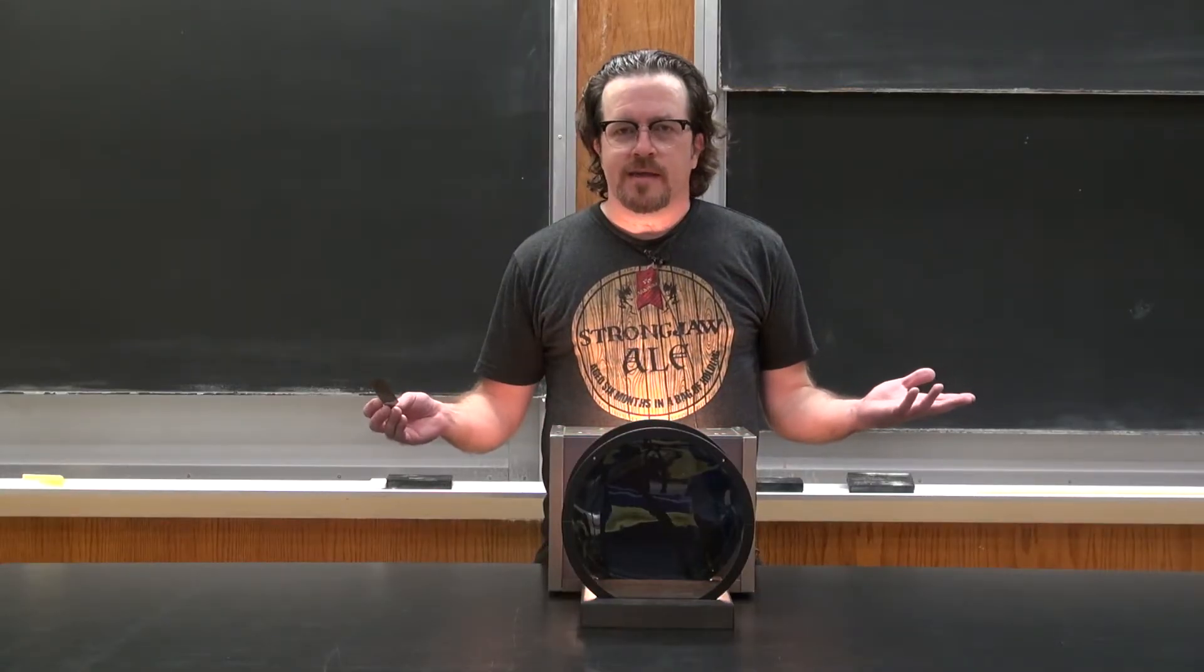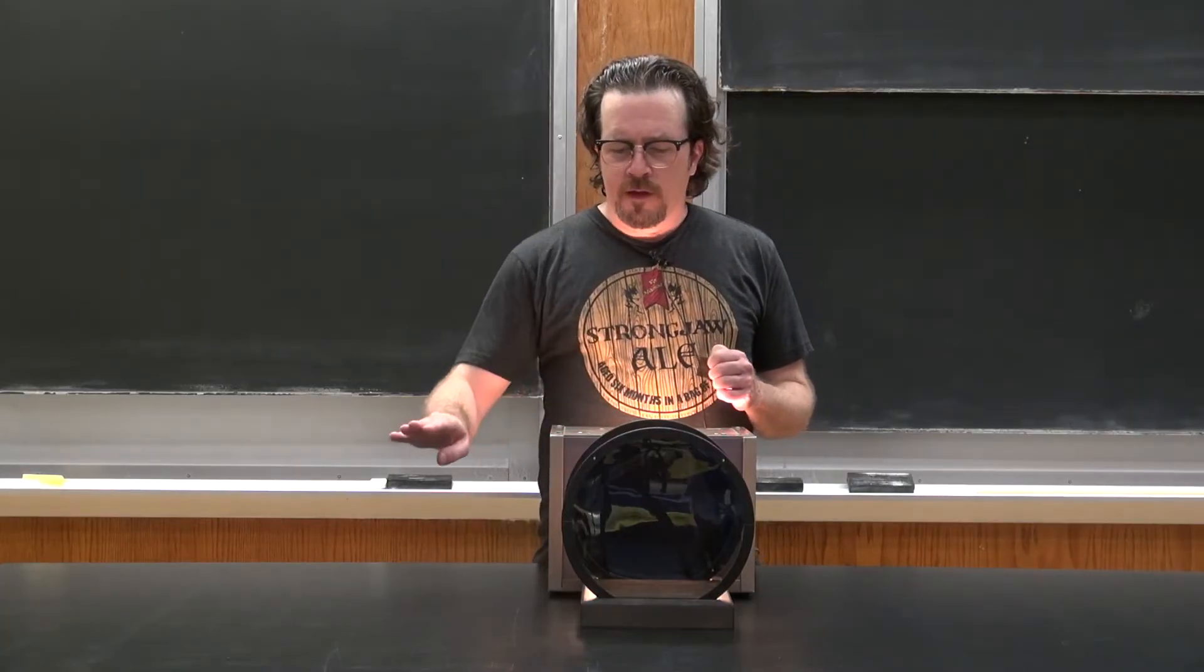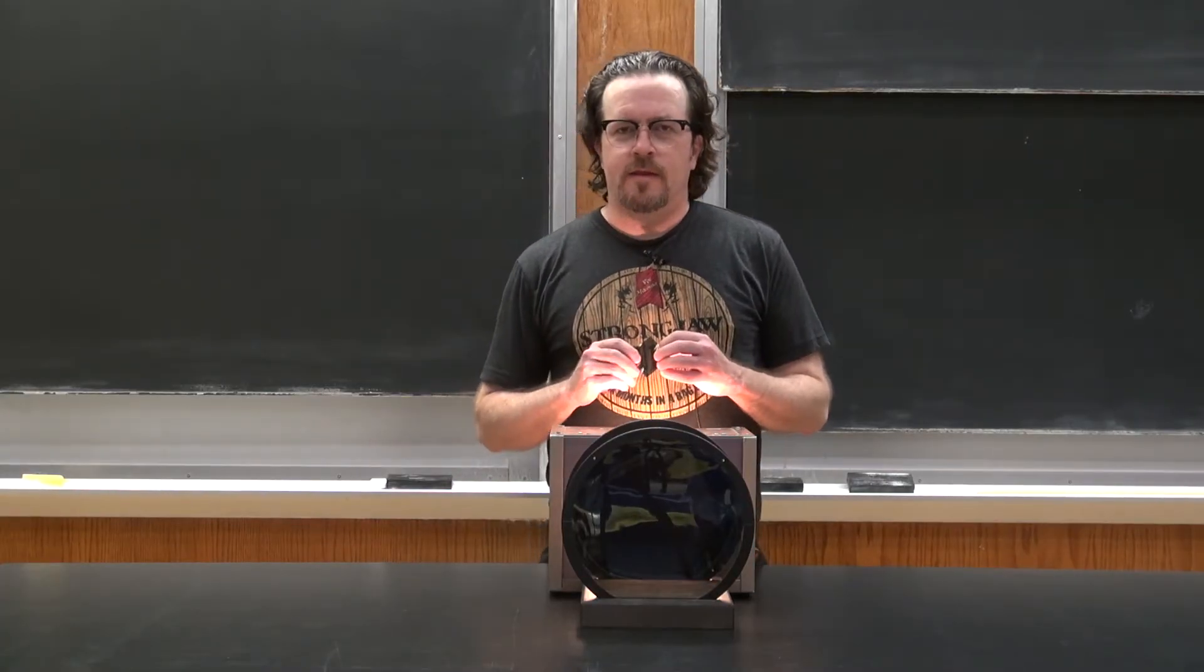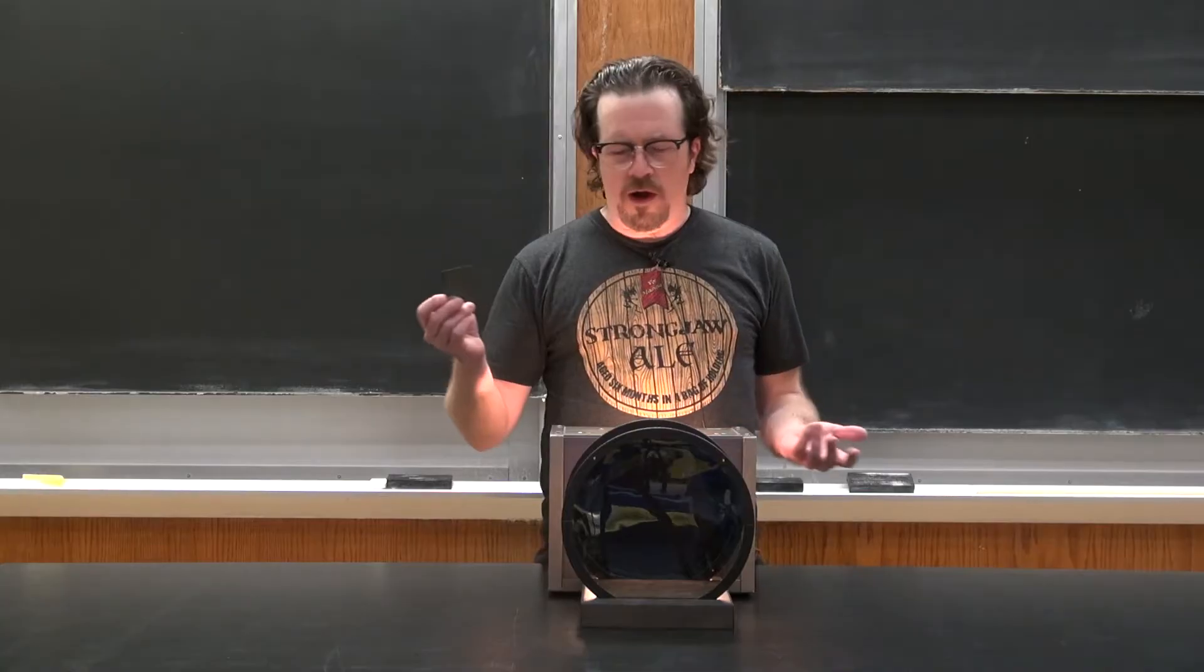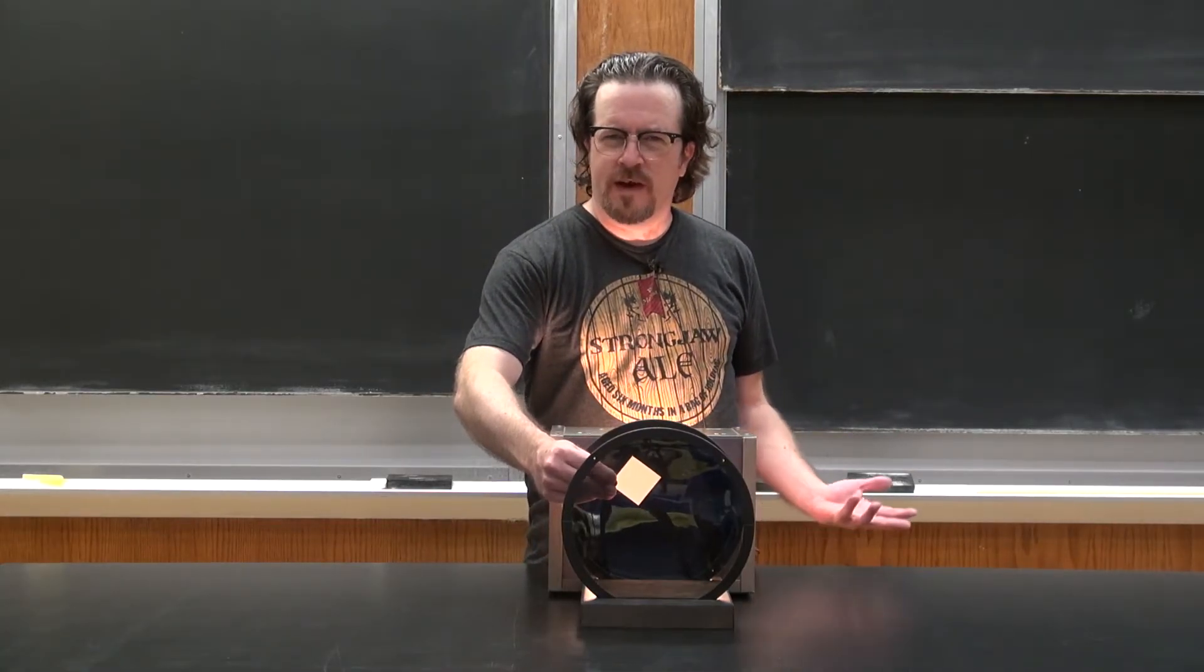So the first time I saw this demo, it didn't make any sense. If this first filter here is only allowing the vertical light through, and this filter here is only allowing the horizontal light through, why should it make any difference if we place another filter in between at 45 degrees?